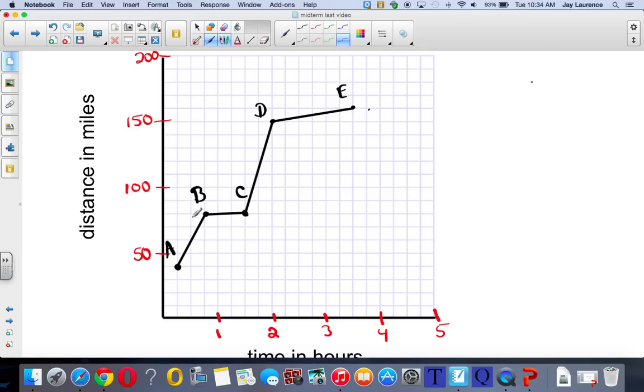All right. I want you to be able to calculate rates based on this graph. We're going to use the equation D equals RT. And so what we're going to do is we're going to look from point A to point B. We're going to see how many miles were traveled. And that would be my vertical distance, right? Vertical would be how many miles traveled. Okay. That's going to be my distance. And my horizontal distance will be my time.